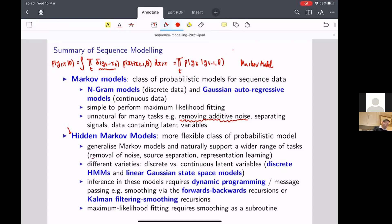So this opens up these tasks which are not naturally supported by Markov models, things like removal of noise or separation, representation learning and so on. There are two different families of HMM: the discrete hidden state HMM and the linear Gaussian state space models. And we've shown how they're intimately related,